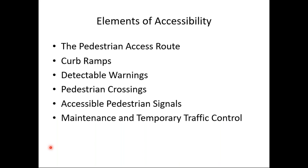The elements of accessibility we'll cover over the next couple of days include: the PAR (pedestrian access route) in ProAg, curb ramps — considered by the DOJ and courts to be the basic element of accessibility and top priority — detectable warnings (truncated domes), pedestrian crossings, accessible pedestrian signals (APS) for communicating signal information to the blind and visually impaired, and maintenance and temporary traffic control including sidewalk work zones.